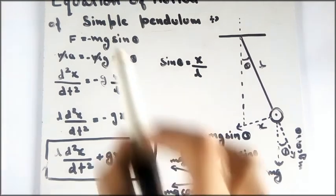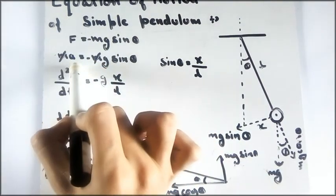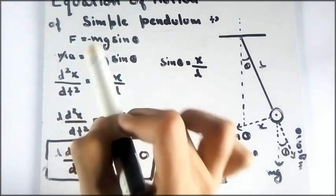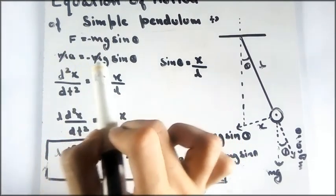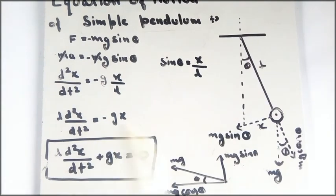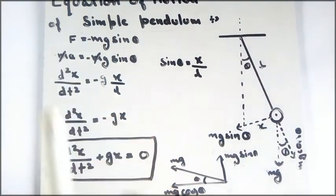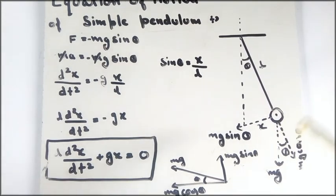Just as we derived the equation of motion of simple harmonic motion, we put F = ma. The mass m cancels on both sides, so we get a = −g sinθ. This is very interesting — the mass cancels out, which leads to a common exam question: does the mass of the pendulum affect its time period?